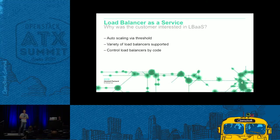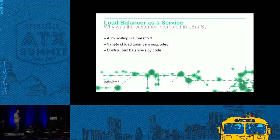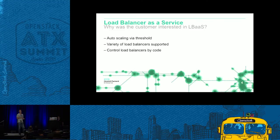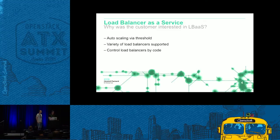They wanted to be able to test out auto scaling via threshold and support a number of different load balancers. So we put together a framework centered around LBaaS v2 in this case, but we'll talk through some of the challenges around that — especially around getting it to proactively scale. They also wanted to integrate that with auto scaling, and to control everything by code using similar load balancers to their legacy environment, within their new Mode 2 area as Gartner would call it.